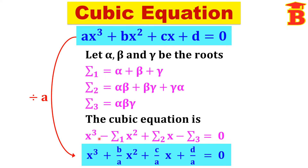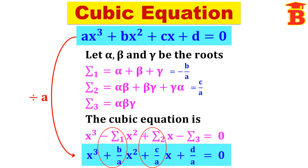The first term should be x cubed. Now equate the x squared term — we must equate the sign also. So sigma 1 equals minus B/A, therefore alpha plus beta plus gamma equals minus B/A. Next, equating the x term: sigma 2 equals C/A, so alpha beta plus beta gamma plus gamma alpha equals C/A. And equating the constant term: sigma 3 equals minus D/A, so alpha beta gamma equals minus D/A.